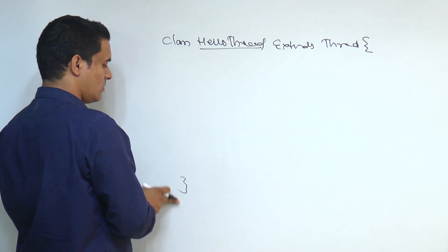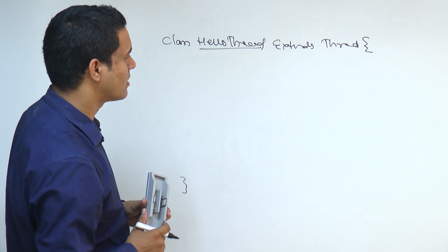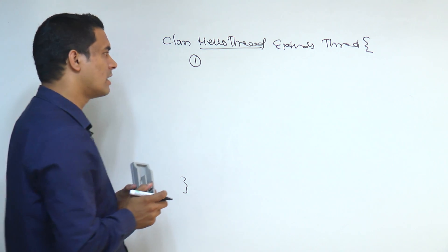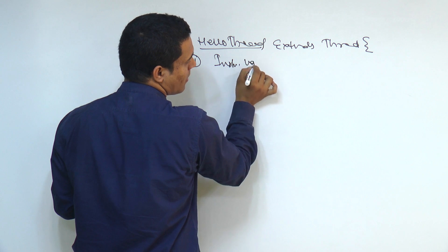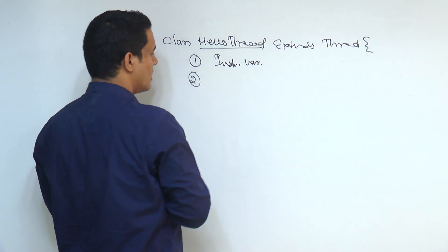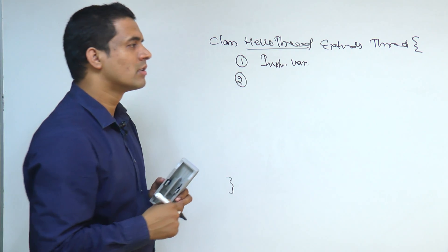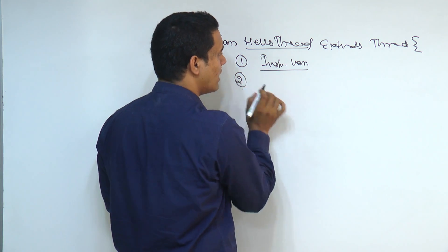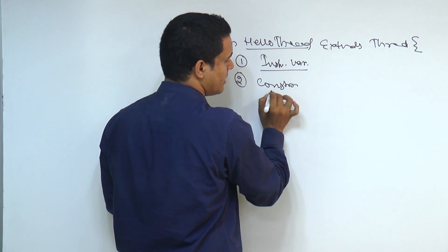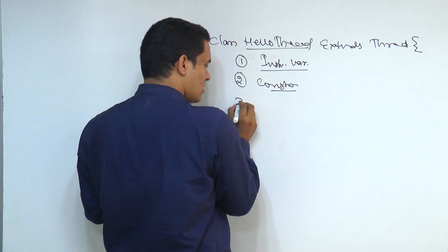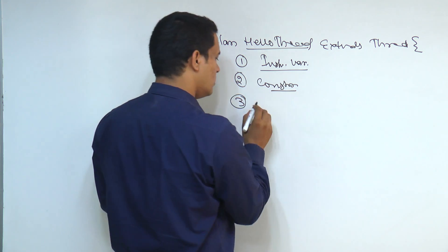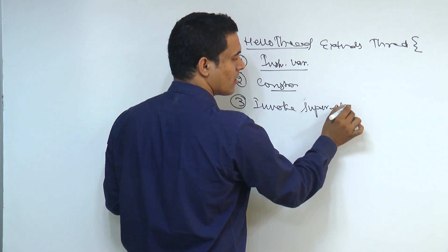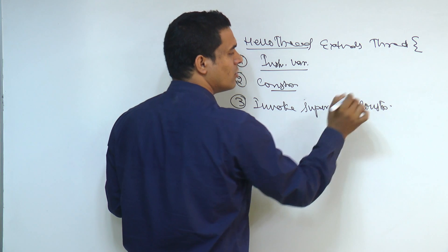Immediately after extending the Thread class, the first step is: if required, declare some instance variables. The second important point is: if required, write down some constructors. The third important thing is: if required, invoke the superclass constructor from the Thread class.